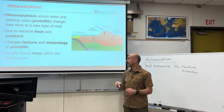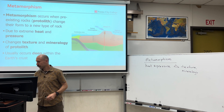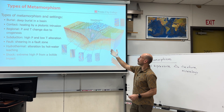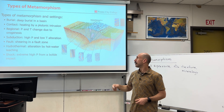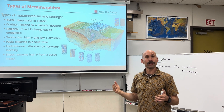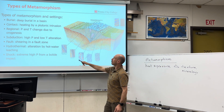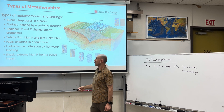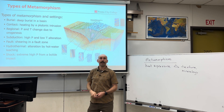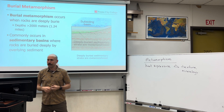There's a variety of ways that this can happen. For the most part, it usually occurs deep within Earth's crust. The types of metamorphism are: burial — deep burial in a basin; contact — heating by igneous intrusion; regional — fold and thrust belts; subduction — subduction zones; faults; hydrothermal — hot water; and shock — a bolide impact. Here is our list, and let's explain each one.